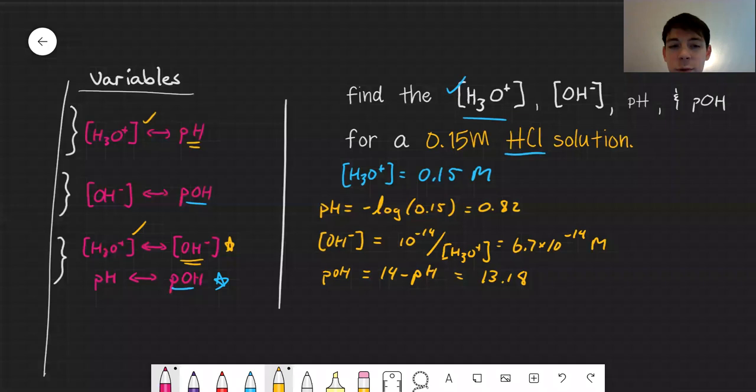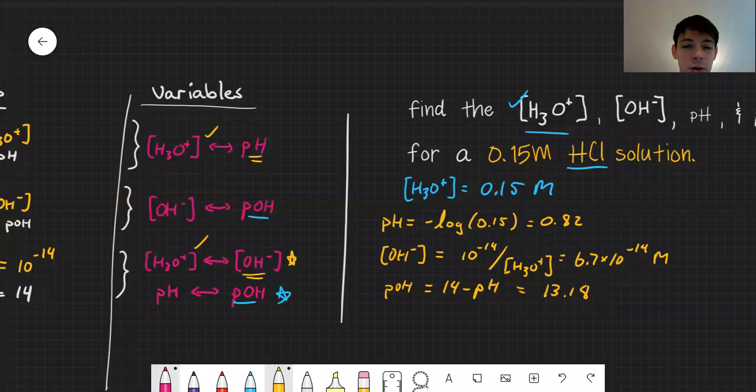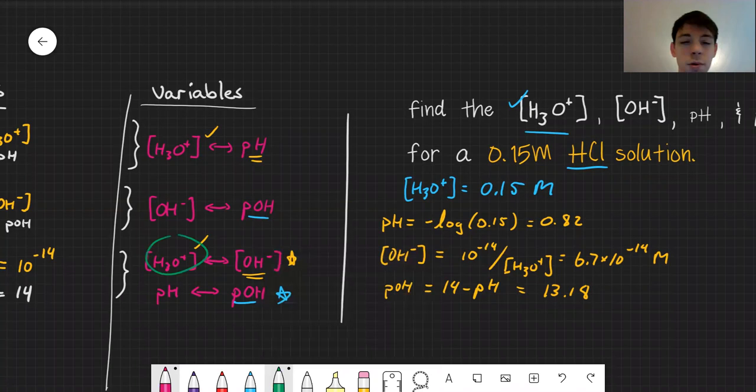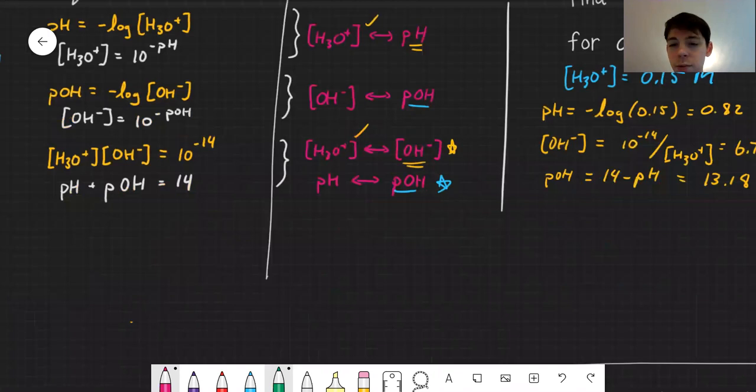The key here is you just want to look at what variable do I know. In this problem, we were given hydronium ions. So I can solve first for pH or OH minus. Once I know pH or OH minus, I can really use the rest of the expressions. Let's try one more.